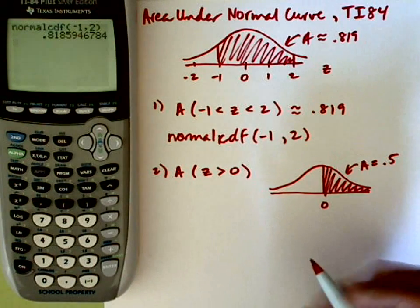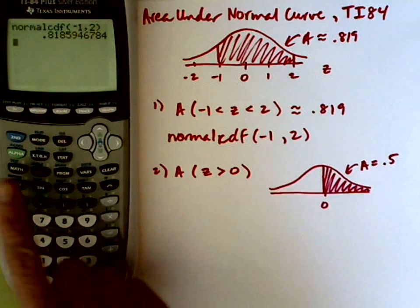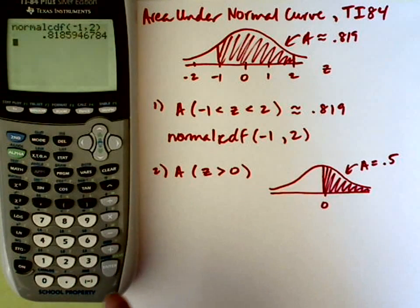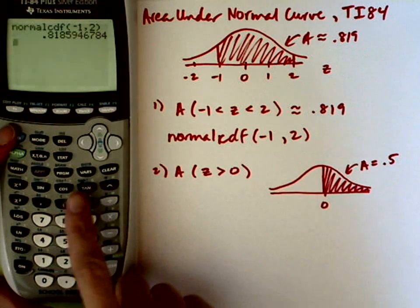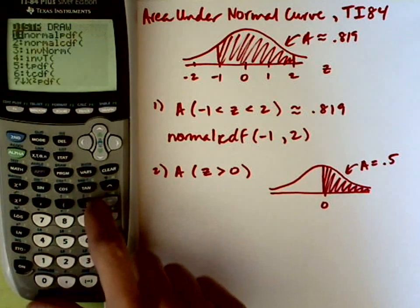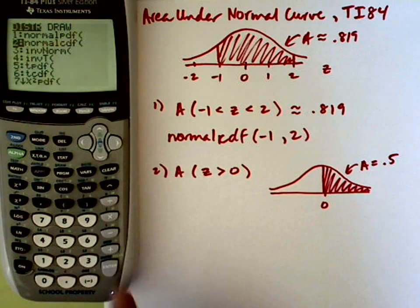But I'm going to ask the calculator to do this. I'm going to go back into the distribution menu, but I'll show you in just a second how you can retrieve the last input. But just to remind you how to get there, I go second distribution, so second distribution. I'm choosing normal CDF.